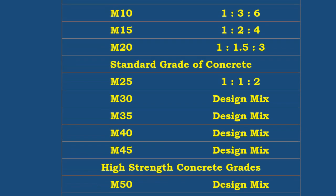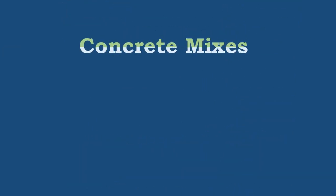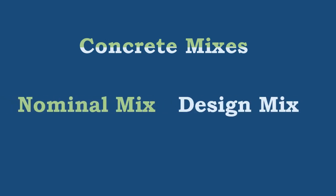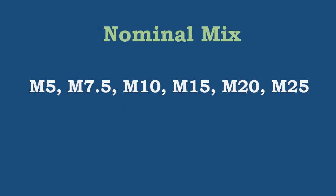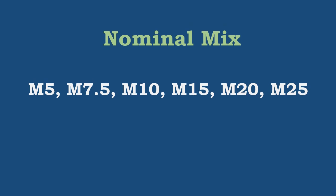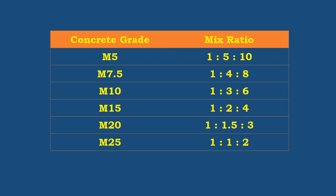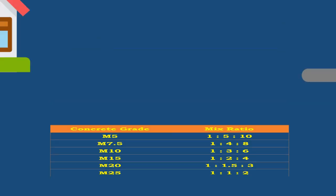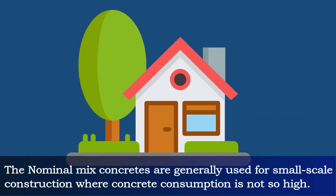In general, there are two types of concrete mixes: nominal mix and design mix. Nominal mixes are those whose mix ratio is defined, and they include grades of concrete up to M25. The mix ratio of different grades is displayed on the screen. Nominal mix concretes are generally used for small-scale construction where concrete consumption is not so high.